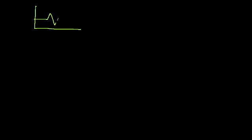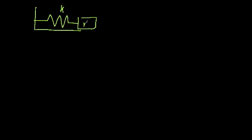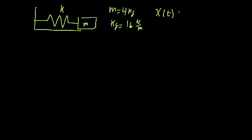First example, we have our ever-so-famous mass and spring system. The spring has a stiffness K, and the block has a mass M. In this particular case, the mass of the block is 4 kilograms, and the stiffness of the spring is 16 newtons per meter. What we want to figure out is x as a function of time, given initial conditions of an initial displacement of 5 meters and an initial velocity of 0.5 meters per second.